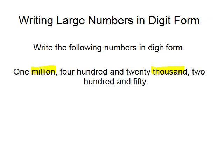So going with this, I would write 1 and then leave a gap, 420 — that is 420,000 — leave a gap, 250. So I have written the number in digit form: 1,420,250.